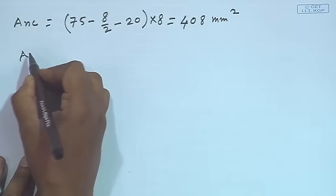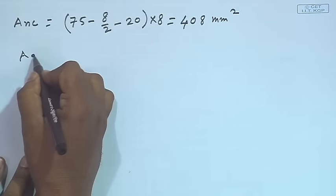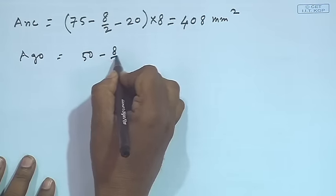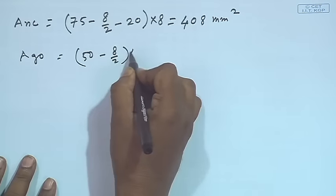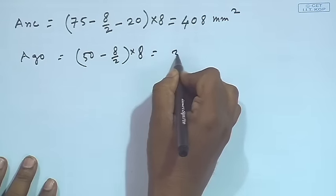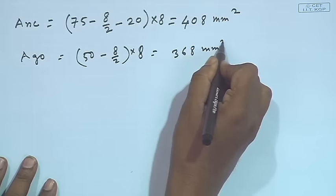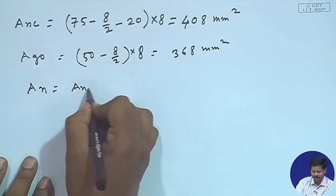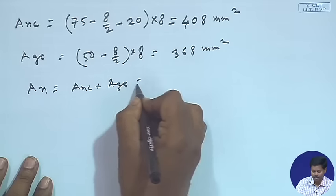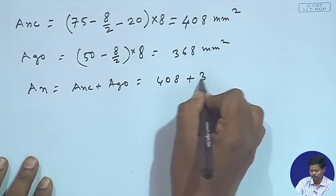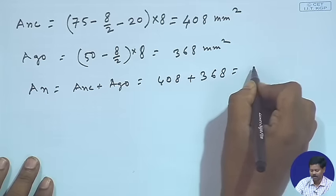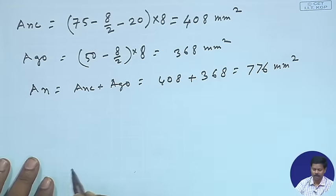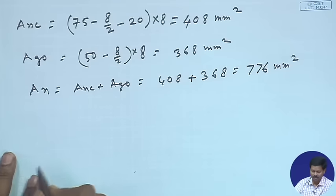ANC — the net area of the connected leg — will be (75 − 8/2 − 20) × thickness = 408 mm². Similarly, gross area of the outstanding leg AGO will be (50 − t/2) × t = 368 mm². So AN, the net area of the angle section, will become ANC + AGO = 776 mm². Now I have to calculate the beta value.